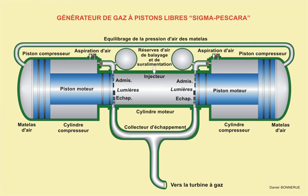As the name suggests, gas turbine engine compressors provide the compression part of the gas turbine engine thermodynamic cycle. There are three basic categories of gas turbine engine compressor: axial compressor, centrifugal compressor, and mixed flow compressor. A fourth, unusual type is the free piston gas generator, which combines the functions of compressor and combustion chamber in one unit.